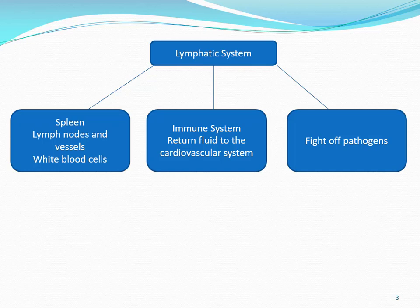The lymphatic system also includes all the lymph nodes and vessels, which are very difficult to see as they're not colored or don't carry a colored fluid like blood vessels do. The immune system returns fluid to the cardiovascular system and also functions to help carry fats from the digestive system to the blood.